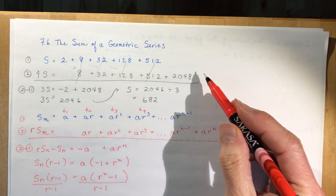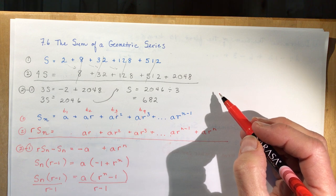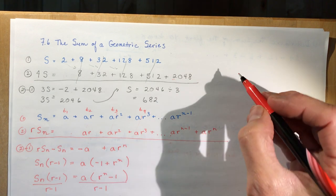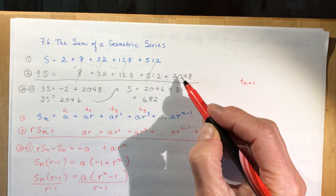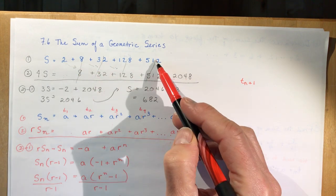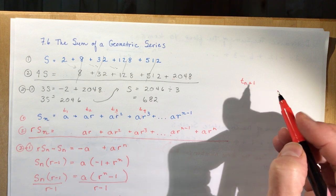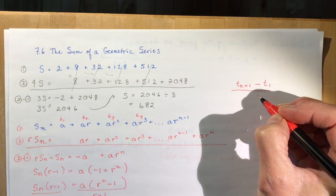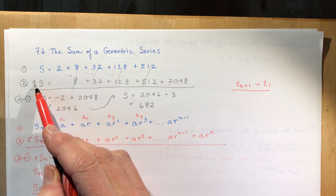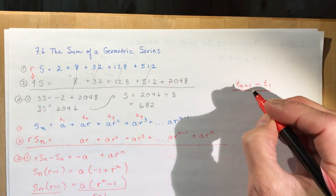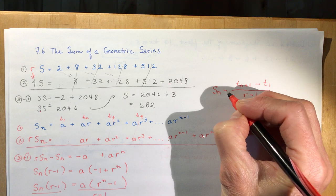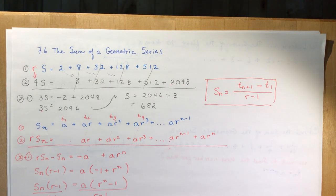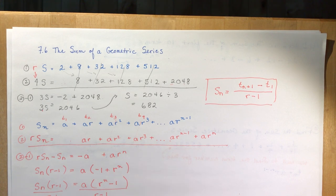The other formula we can derive from the numerical example we did earlier. What we did was take one more term — that's tn plus 1, going one term farther than the series. My series only went from 2 to 512, but I took one more term past it. I subtracted the first term, which is our a, and then divided by the number 3, which was r minus 1. So those are your two formulas to use when solving problems with geometric series.